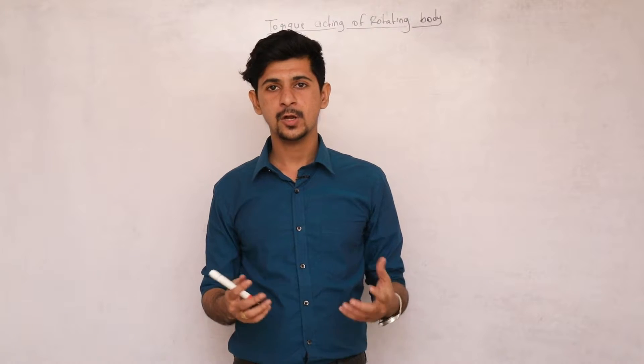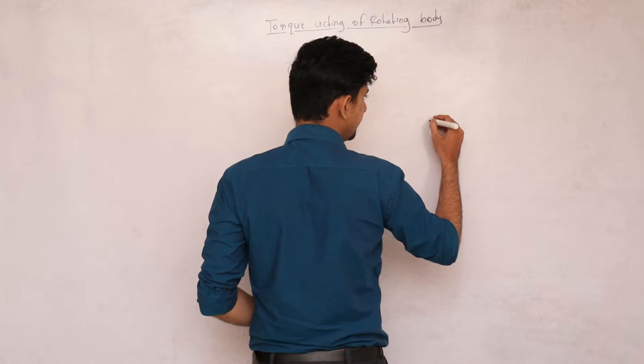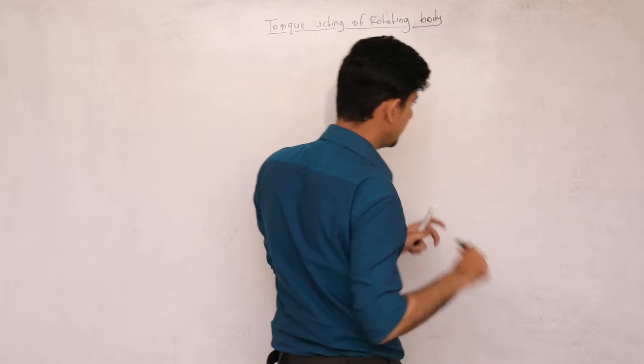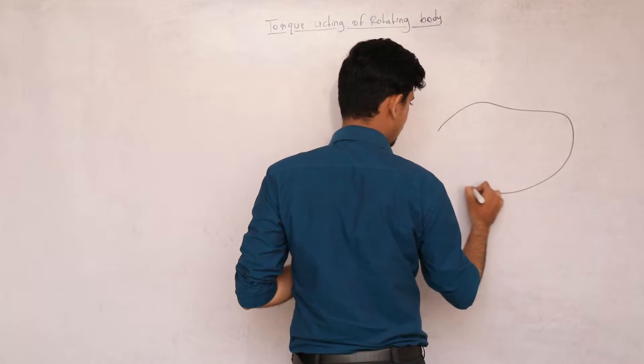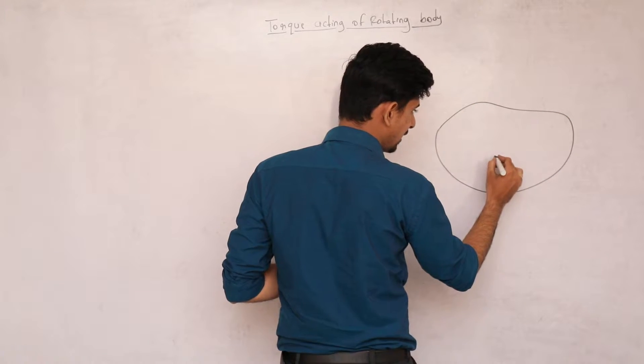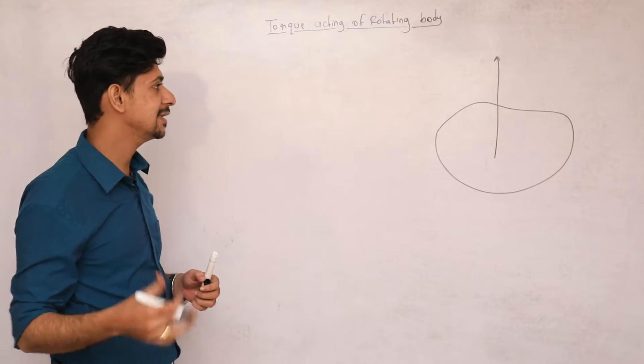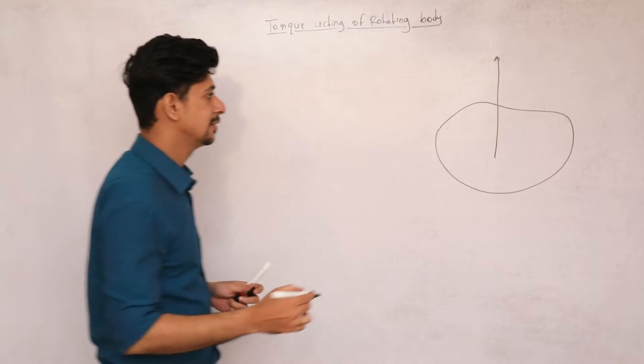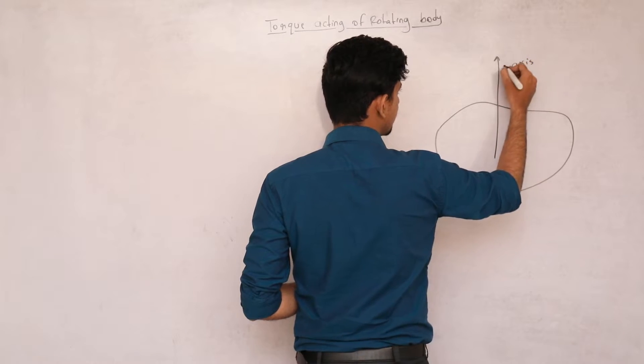In this topic, we'll be finding torque acting on a rotating body. Let's start by taking a rotating body of irregular shape. This is the only diagram you can use because it is irregular shape. So this is my axis, axis of rotation.